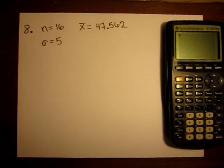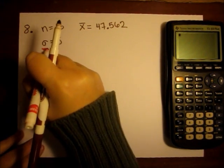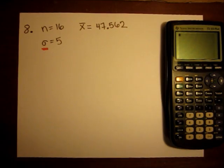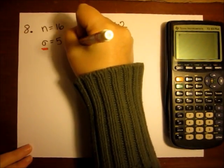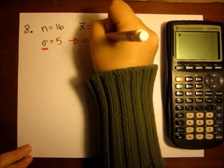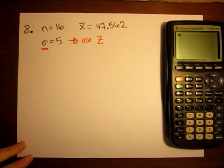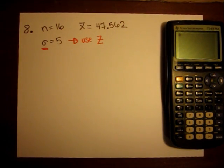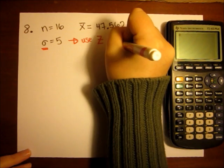Now when we know the true sigma, not just the sample standard deviation, it means I'm going to be using z. If I'm doing a confidence interval, it would be a z interval. If I'm doing testing, such as having a null and an alternative hypothesis, I'm going to be using the z test.